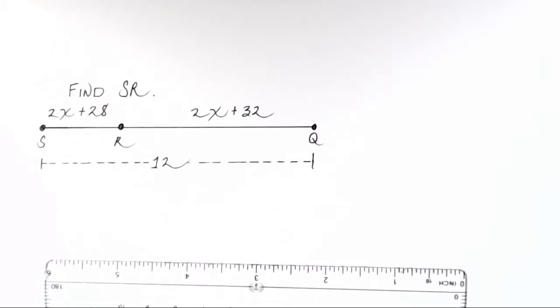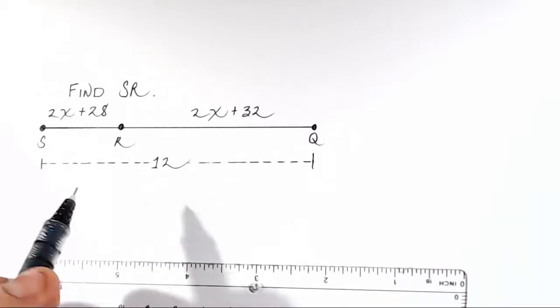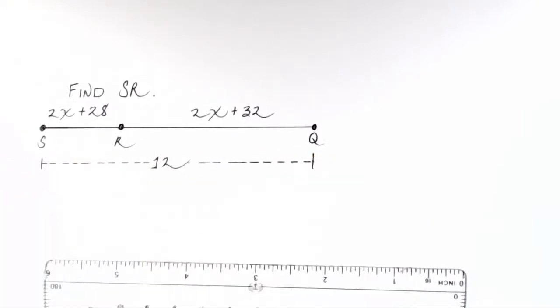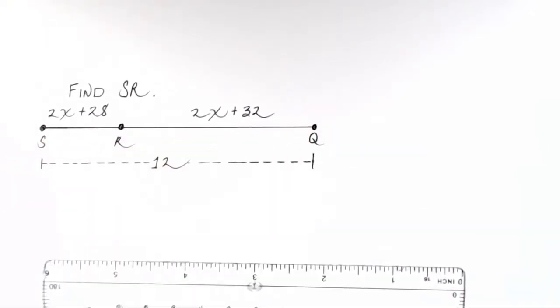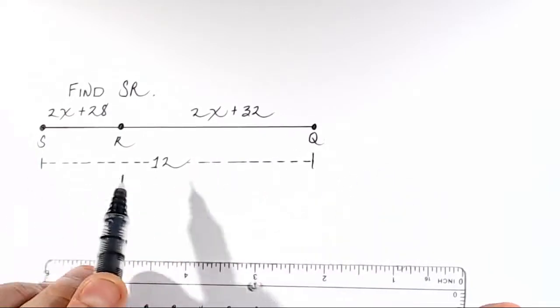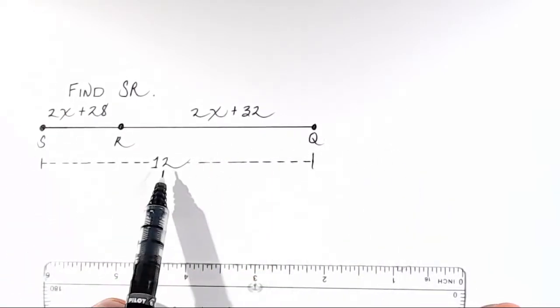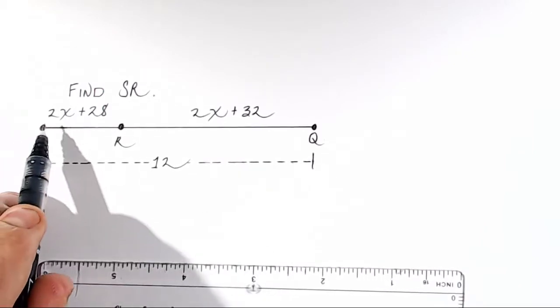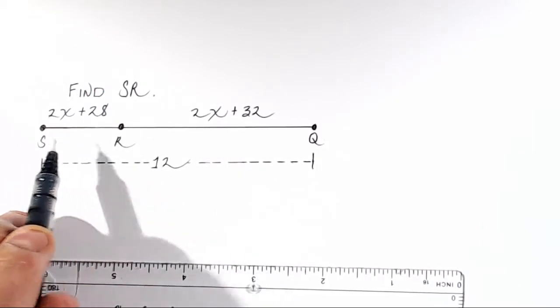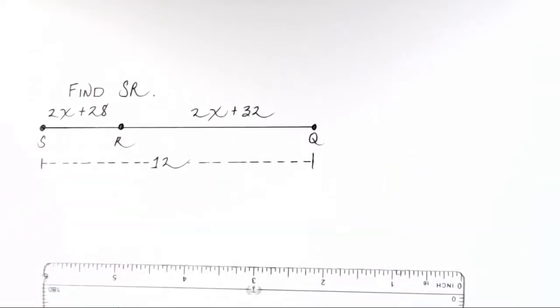It is important at this point to remember what the segment addition postulate tells us about this problem we're faced with right now. What it says is that the total length of a line segment is equal to the length of the little pieces that make it up. I'm paraphrasing it there, right? But what it means is the full length right here, S to Q, from S all the way to Q is equal to 12, and that must be equal to the sum of these smaller segments, SR and RQ.